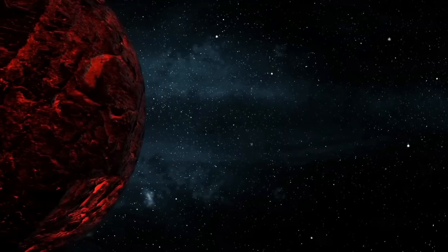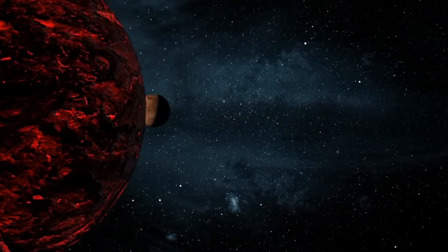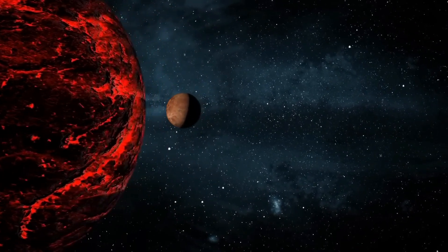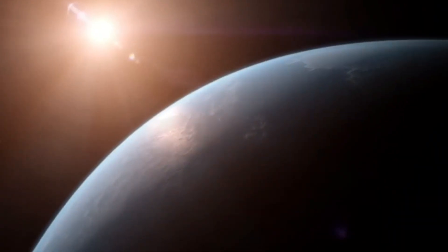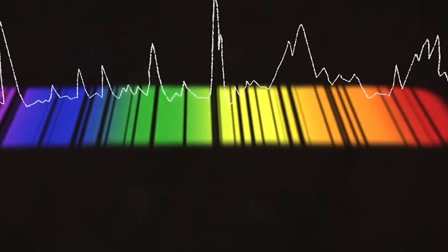They were able to figure out how much infrared light the planet gives off by taking the brightness of the star during the secondary eclipse and subtracting it from the brightness of the star and planet together. This gave them a way to figure out how much infrared light the planet gives off.